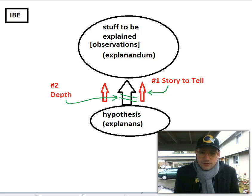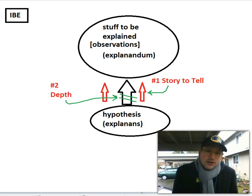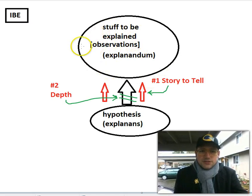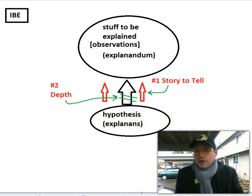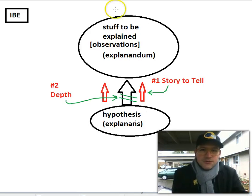We had 'story to tell' and 'depth' — that's what we talked about yesterday. As a brief recap: the first criterion, 'story to tell,' is that if there are multiple things to be explained in these observations, a better hypothesis would be able to at least attempt to explain everything that's in the stuff to be explained. What counts as the stuff to be explained depends on the context.